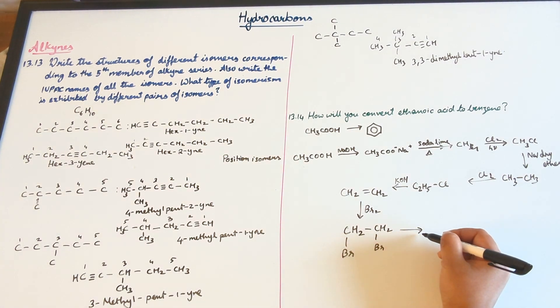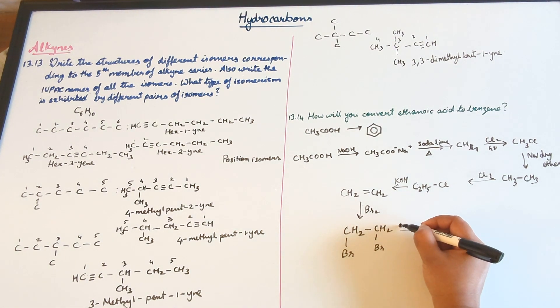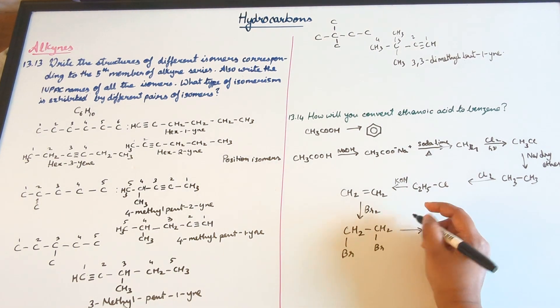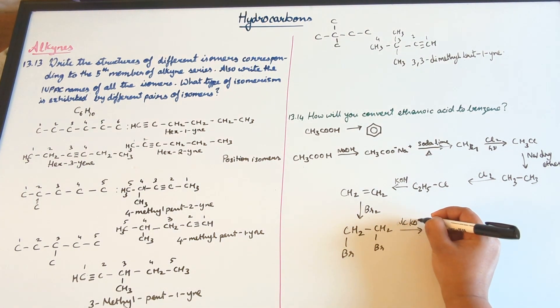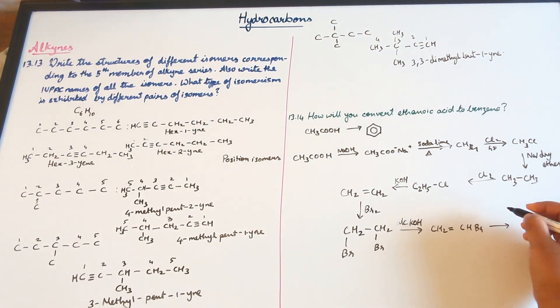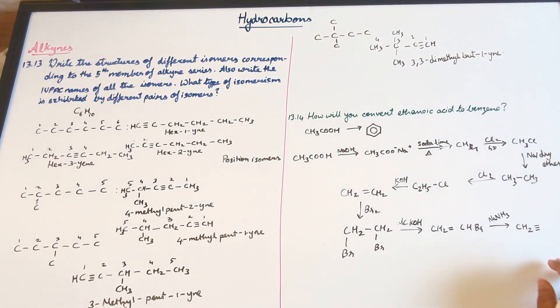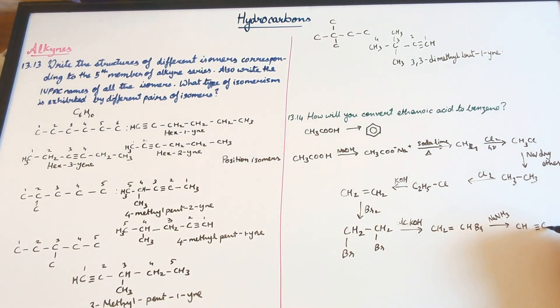And we know from vicinal dihalide we can synthesize an alkyne. With alcoholic KOH, we can synthesize an alkene as well. And this reacts with sodamide NaNH2 for us to get CH triple bond CH.